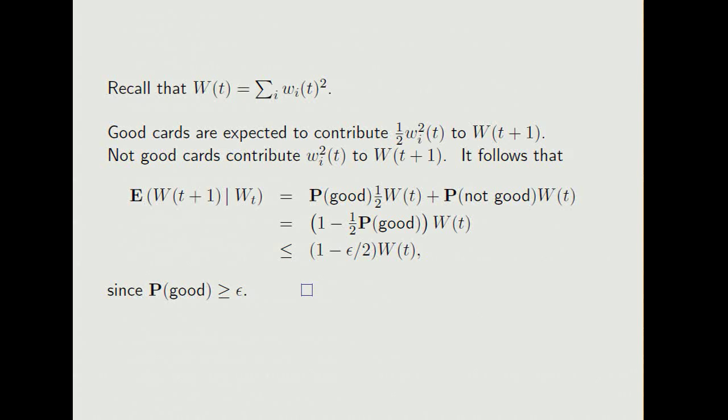Now since the probability of being good plus the probability of being not good equals 1, this is the same as 1 minus a half the probability of being good, times the value at time t.